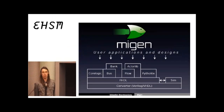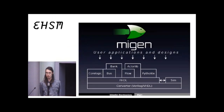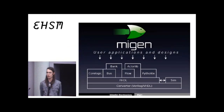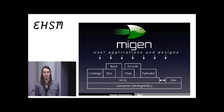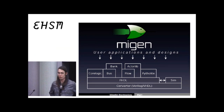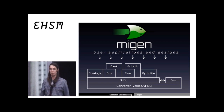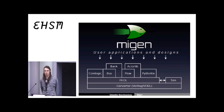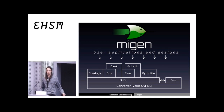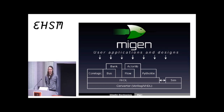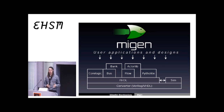Migen is really a toolbox. It's a collection of tools based on Python which enables you to build complex digital hardware. By complex digital hardware, I mean basically what the previous two talks were about — digital design that you typically put in an ASIC or more commonly in an FPGA — which means that basically you are working with binary boolean functions and registers.